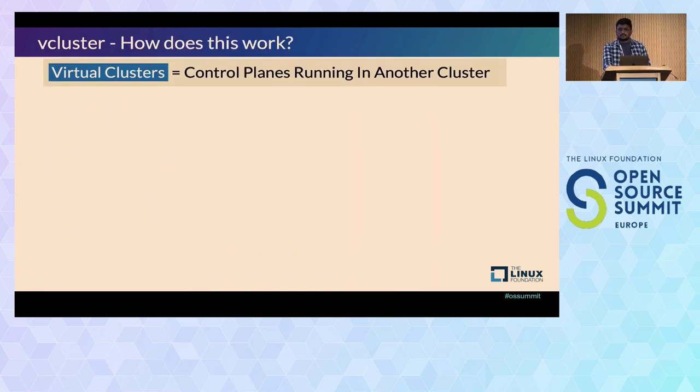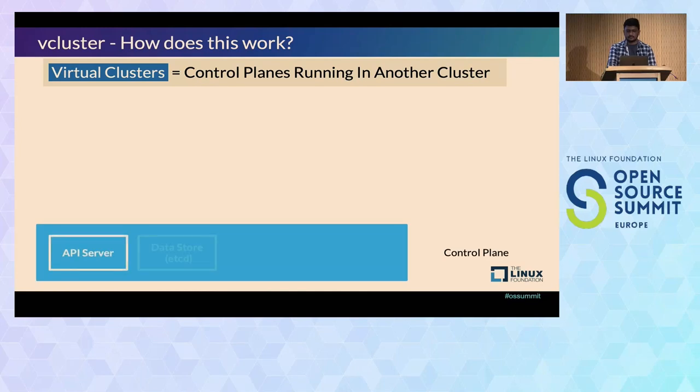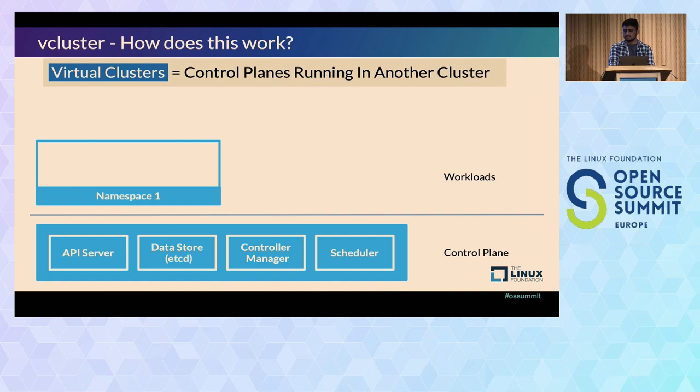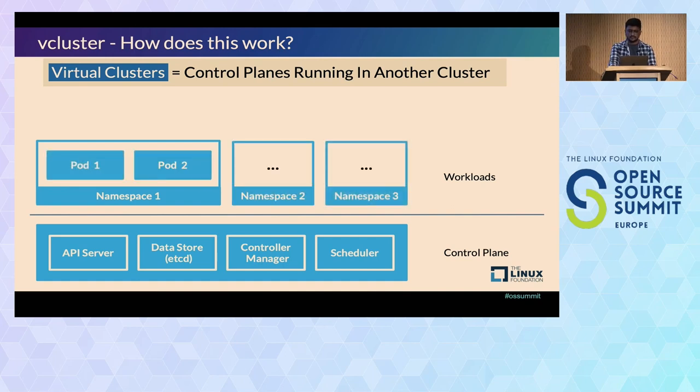So how does this work exactly? You guys are here for this, how Kubernetes inside Kubernetes is working. Basically a virtual cluster is a control plane running inside another Kubernetes cluster. As we know a control plane is API server, data store, control manager, and a scheduler which governs the workloads which are running in the namespace. There can be multiple namespaces. As a user we can only interact with the API server.